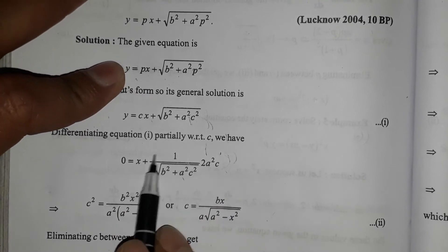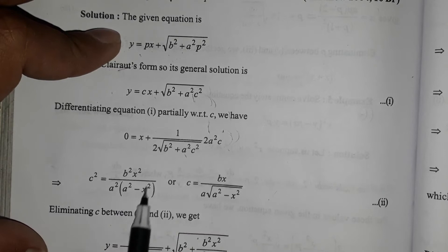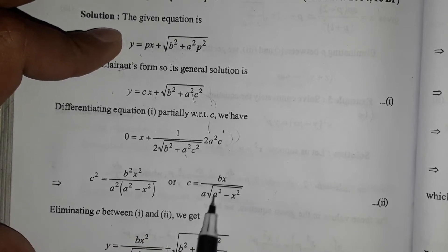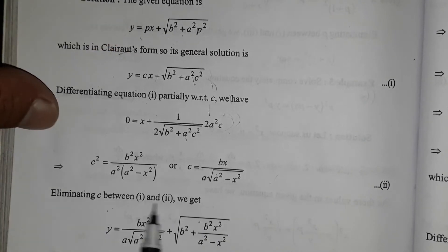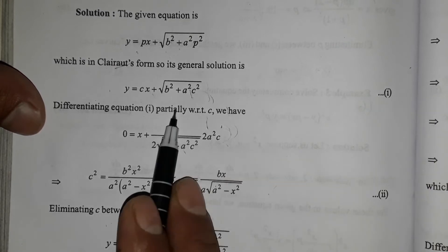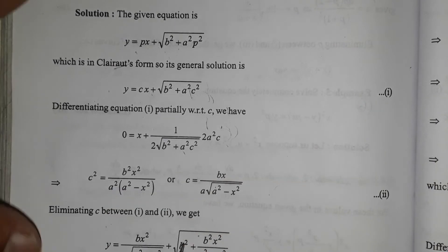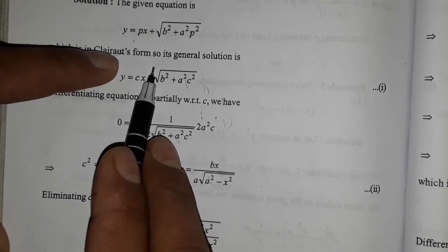Simplifying gives c² equals b²x²/(a²(b²-x²)). Now eliminating c between the first and second equations, we solve for the value of c.